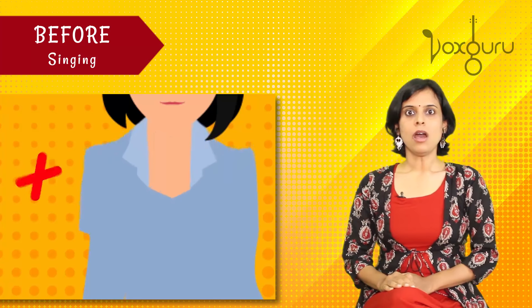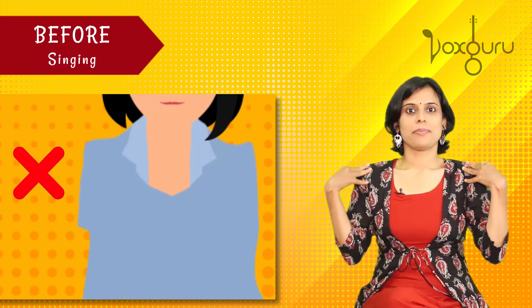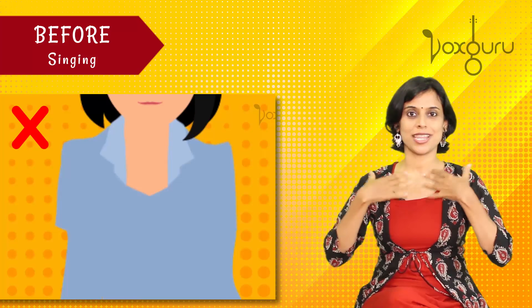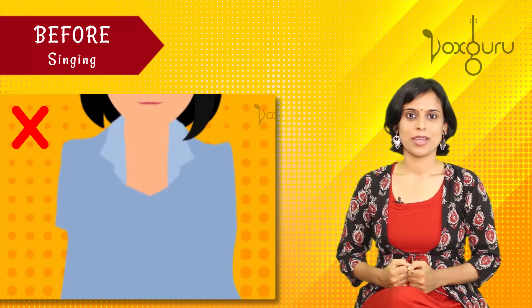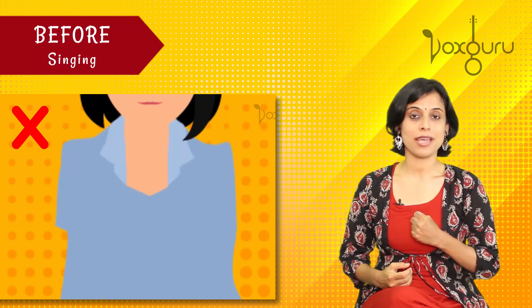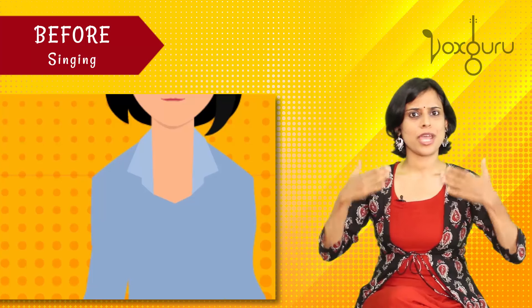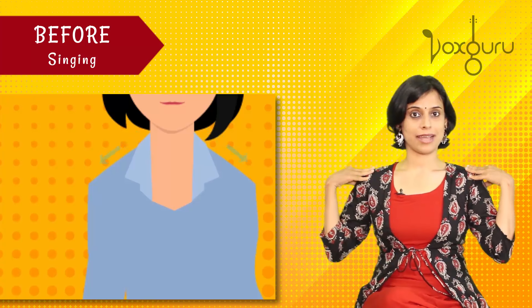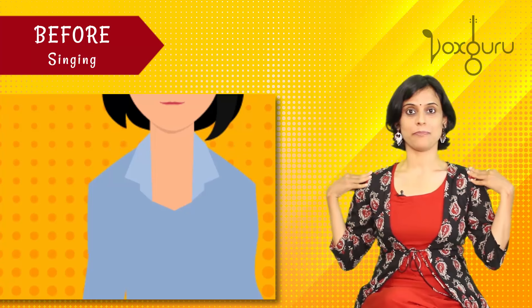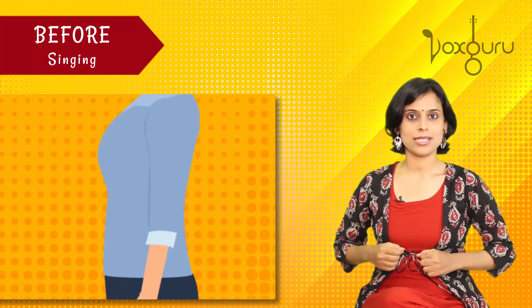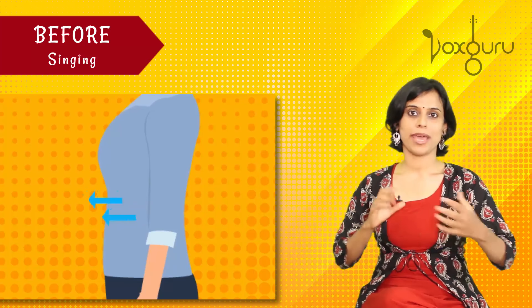Now, one common mistake we make when we inhale is we tend to lift up our shoulders and create so much strain and tension in the upper body. This makes it very difficult to sing and also to sustain breath. So instead of straining your upper body, keep it relaxed. Make sure your shoulders don't lift up, and instead use the lower body — the abdomen muscles — to help expand your lungs.